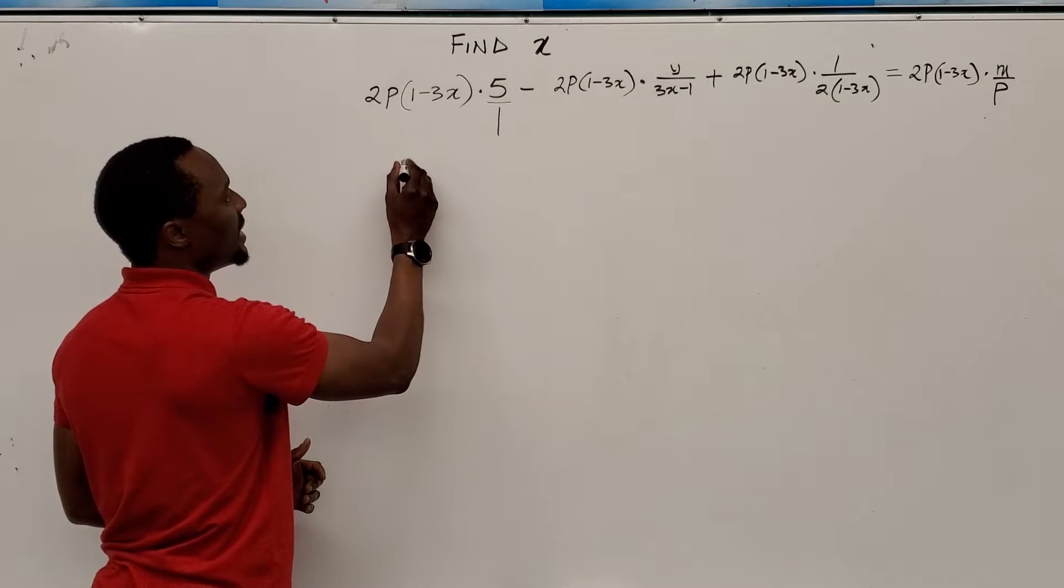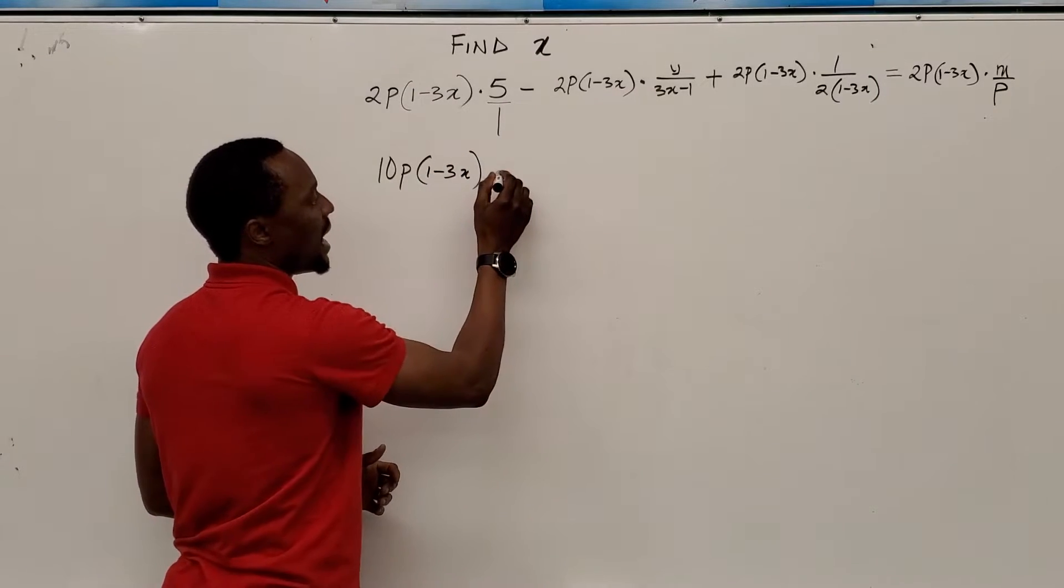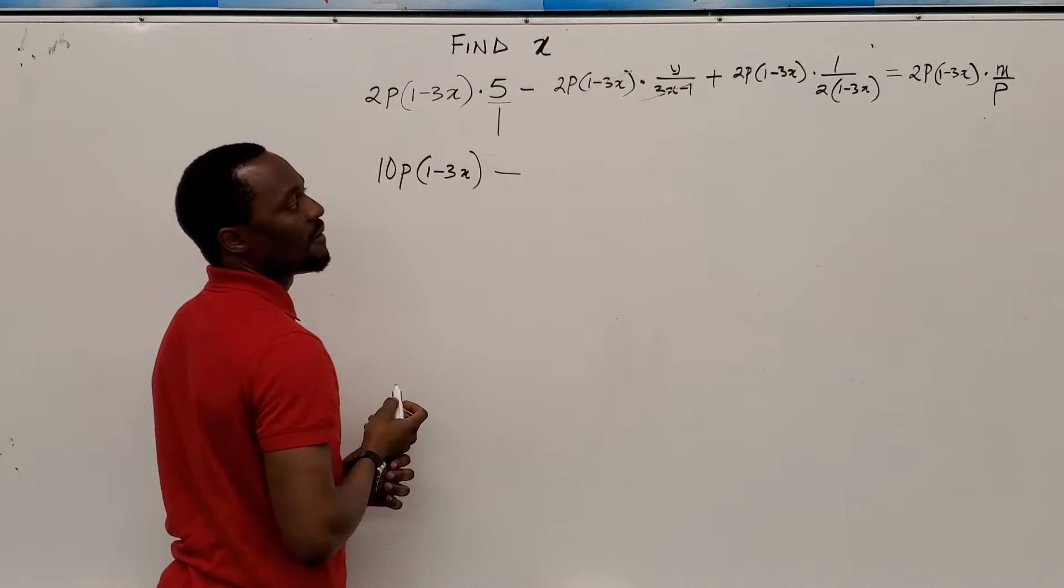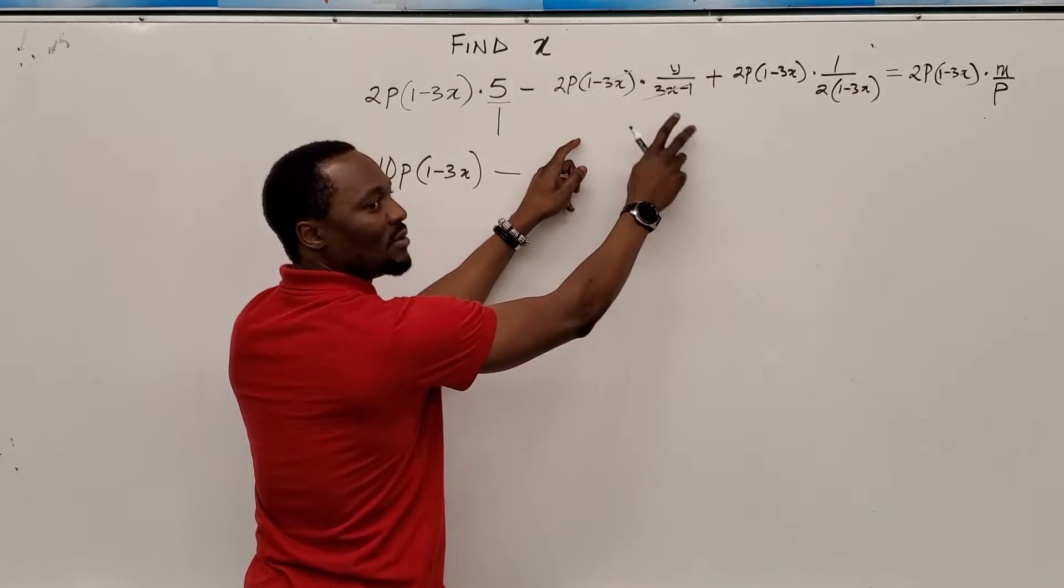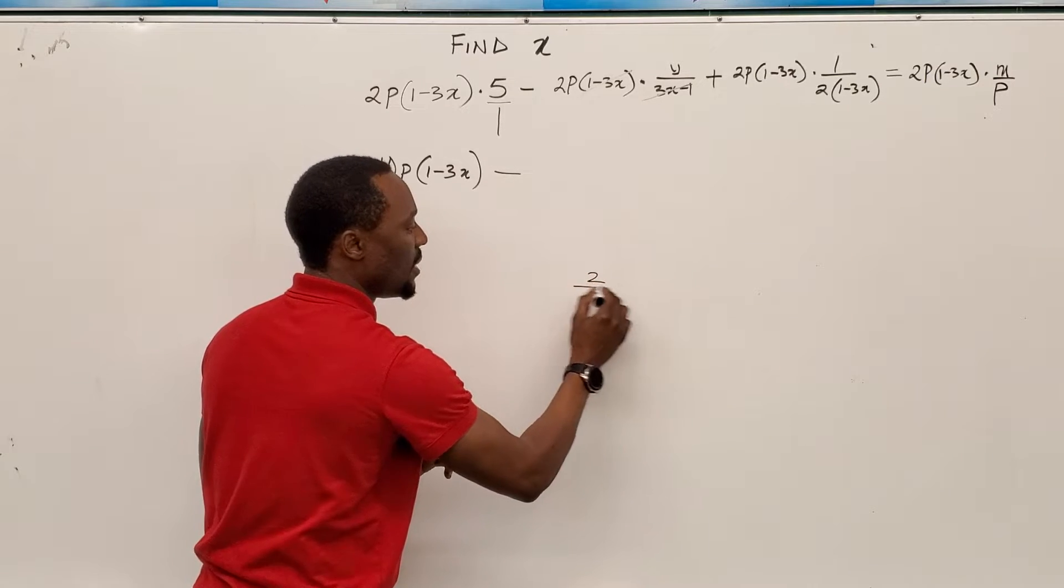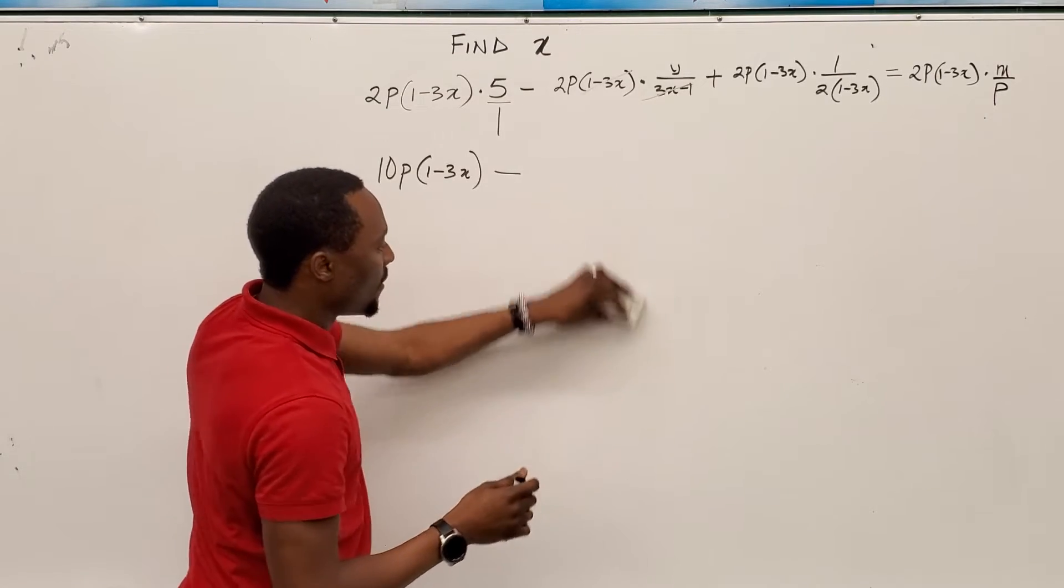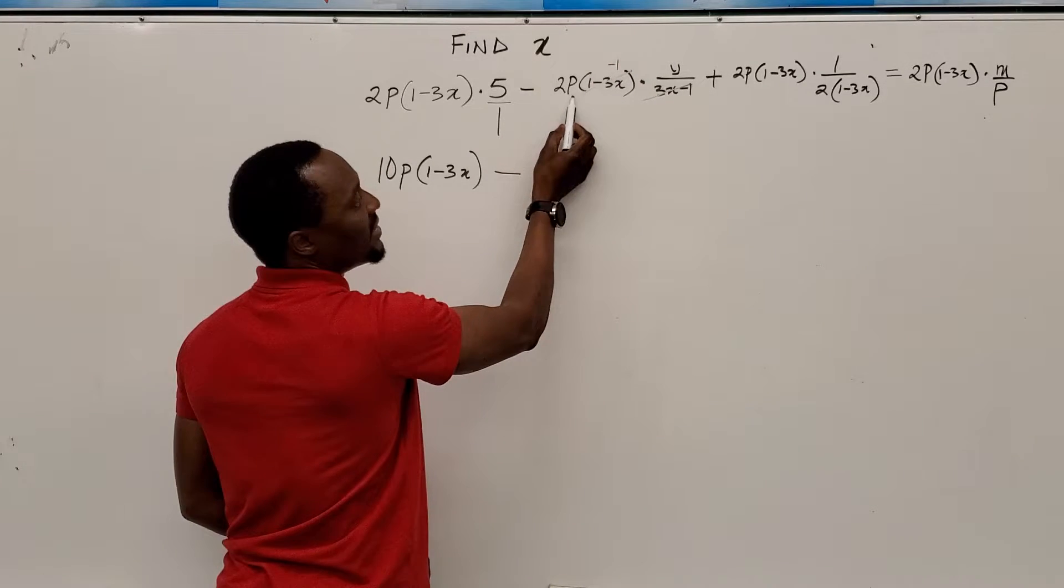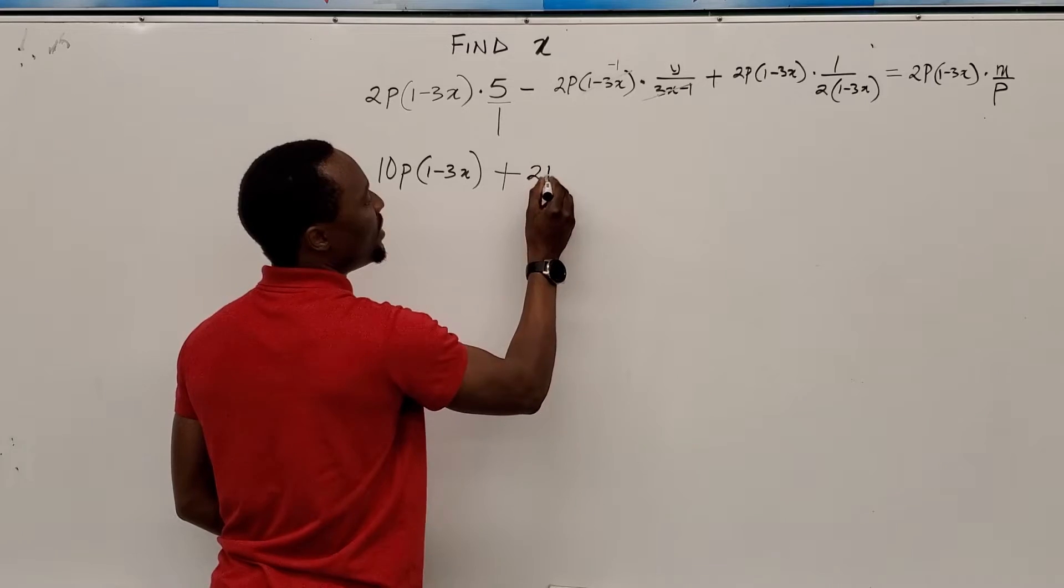5 times 2p gives you 10p into 1 minus 3x minus this. Well, divide this not 1 time, but negative 1 time because it's the switched one. Remember, this is 1 minus 3x. This is 3x minus 1. It's the same thing as dividing 2 by negative 2. So you get negative 1, remember, from the example. So this is going to be negative 1. That's what you get. So negative 1 times this is going to give you a positive 2p with the y. 2p y.